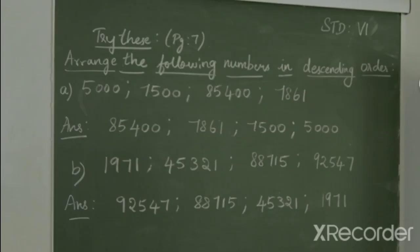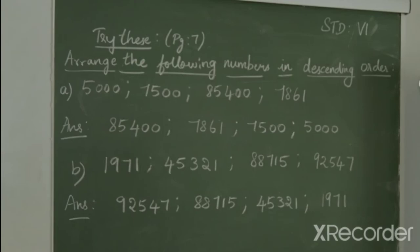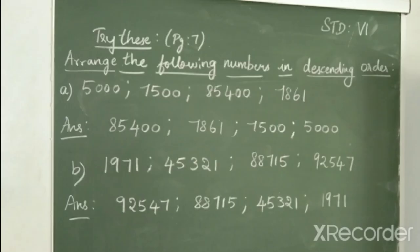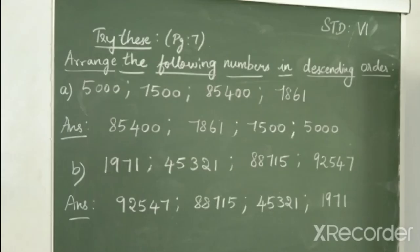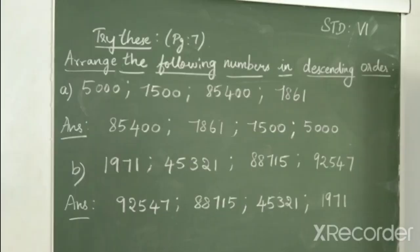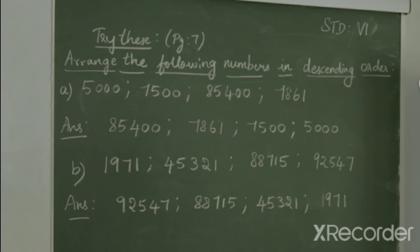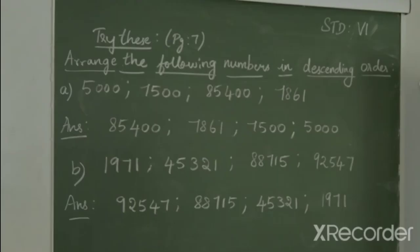Moving on to the next one: 1971, 45321, 88715, and 92547. So, the greater number is 92547, then comes 88715, then comes 45321, followed by 1971.